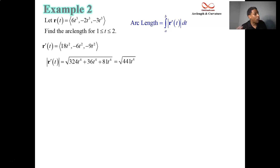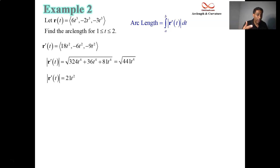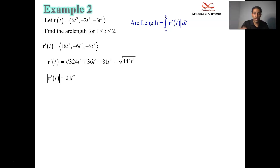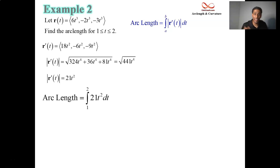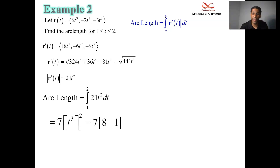21 squared is 441, so we have a perfect square under the square root. The speed at time t is 21t squared. Integrating 21t squared from 1 to 2, the antiderivative is conveniently 7t cubed. Evaluating: 7 times 8 minus 7 times 1, which is 56 minus 7. The answer to this example is 49.